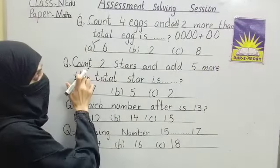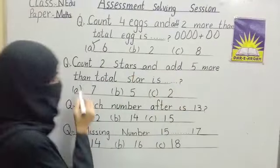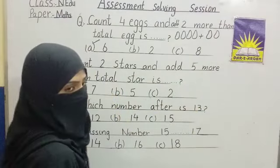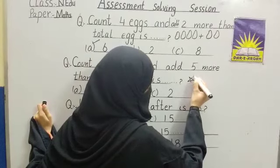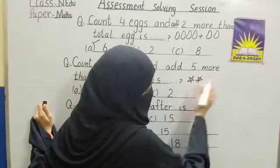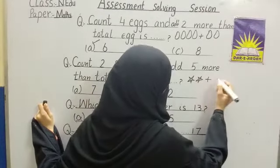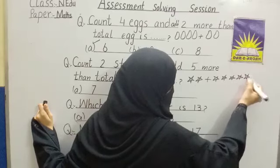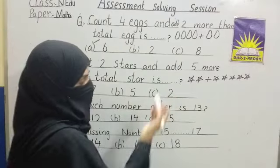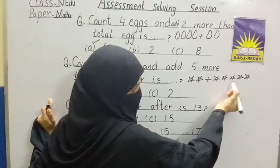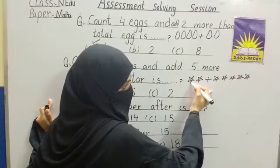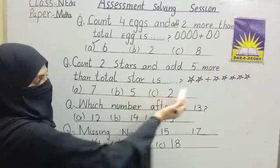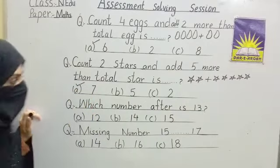Our next question: count two stars and add five more — what is the total? You already have two stars. Count: one, two. Add five more: one, two, three, four, five. Total stars: one, two, three, four, five, six, seven. Option A: seven. Option B: five. Option C: two. Yes, very good — seven. Tick option A.